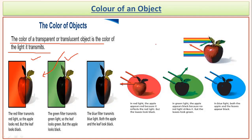For an opaque object it works a little differently. For example, if you see an apple under white light, the surface of the apple appears red in color and the leaves appear green. This is because out of all the seven colors, red is bounced back from the surface of the apple while all other colors are absorbed. Similarly, through the leaves only the green light is reflected back and all other colors are absorbed.